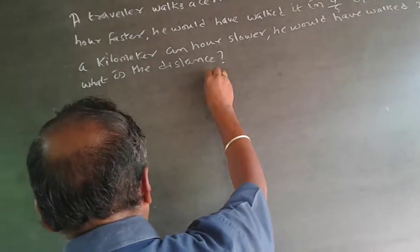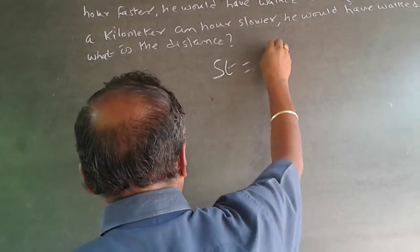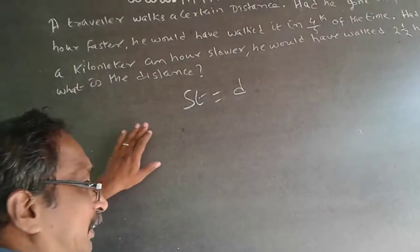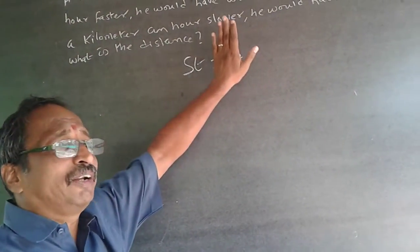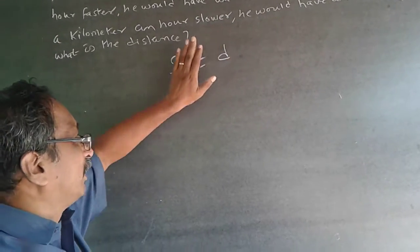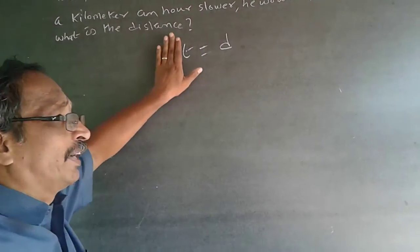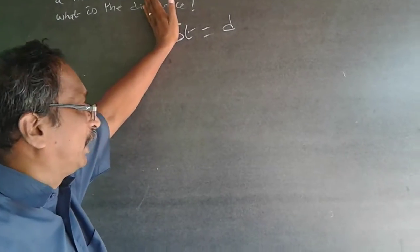My first fundamental knowledge whenever it comes to speed, time and distance is ST will be equal to D. Why I write it always like this is, I have seen lots of questions. The distance has always remained constant. The manipulation takes place between speed and time.